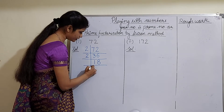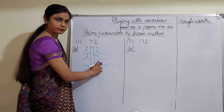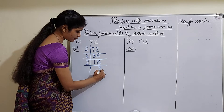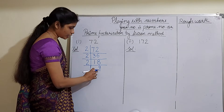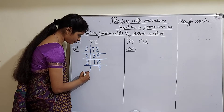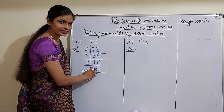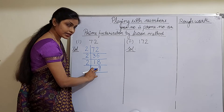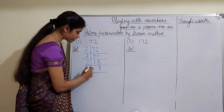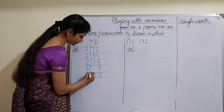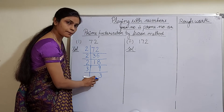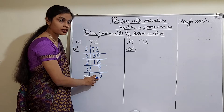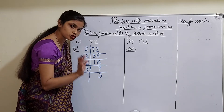Now again divide 18. It can be exactly divided by 2, giving us 9. Now 9 is not exactly divisible by 2, but the next prime number is 3. So 9 is exactly divisible by 3 — 3 threes are 9. Now 3 again is a prime number, and when you reach a quotient that is a prime number, you stop there.